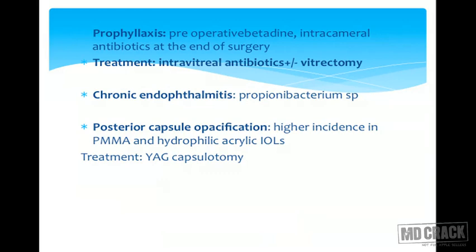Prophylaxis of endophthalmitis is extremely important. Two steps that have stood controlled trials and the test of time are: pre-operative instillation of betadine in the conjunctival cul-de-sac, and intracameral antibiotics at the end of surgery, as supported by recent European trials. Treatment depends on severity and visual acuity at presentation. If visual acuity is reduced to less than hand movements, vitrectomy with intravitreal antibiotics is first-line. If visual acuity is better, intravitreal injections can be given and the patient monitored closely, proceeding to vitrectomy with intravitreal antibiotics if worsening occurs.